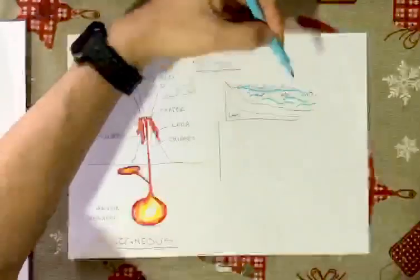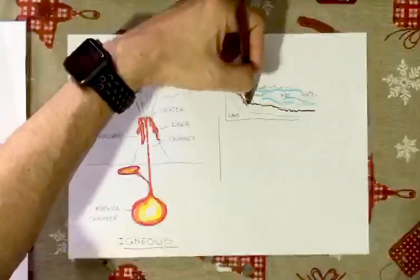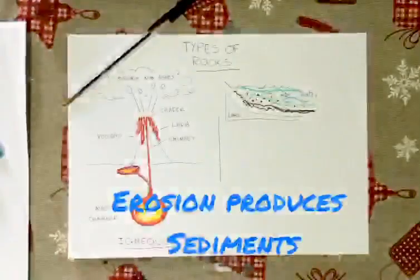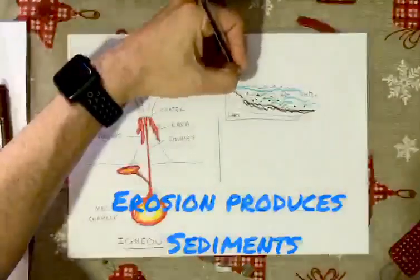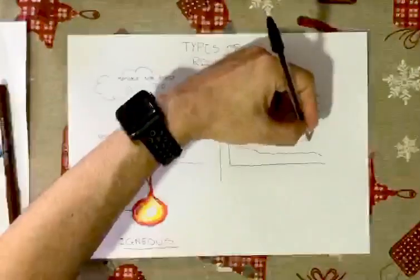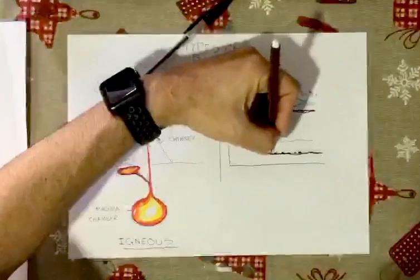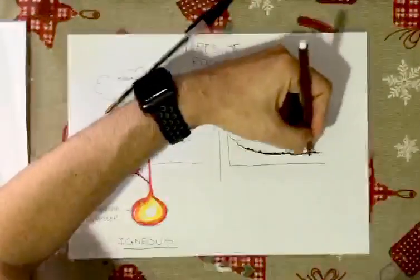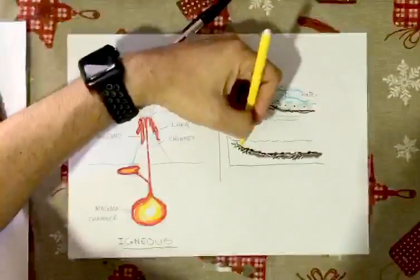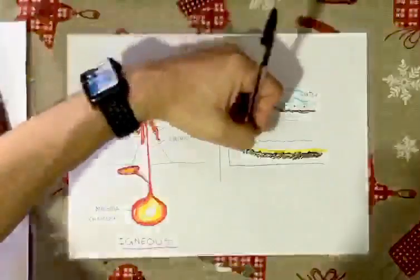The surface of the earth, the rocks and other materials, are eroded by the air, water, or other causes. The sediments are small particles that come from this process of erosion. And sometimes they end up in the water and begin to settle.